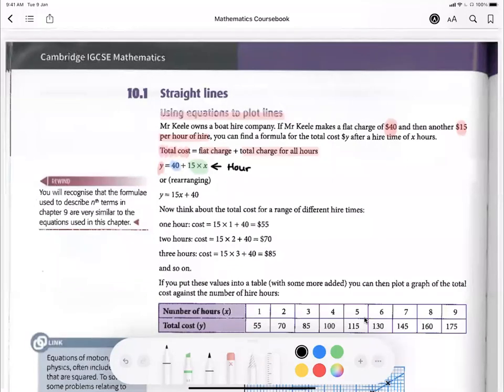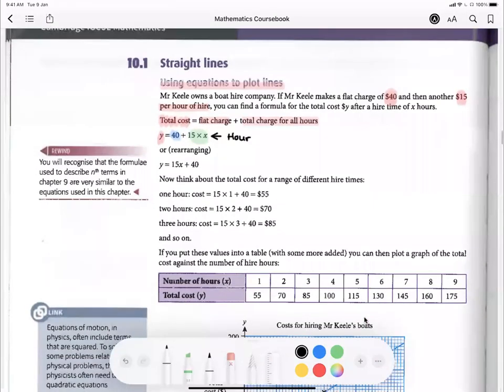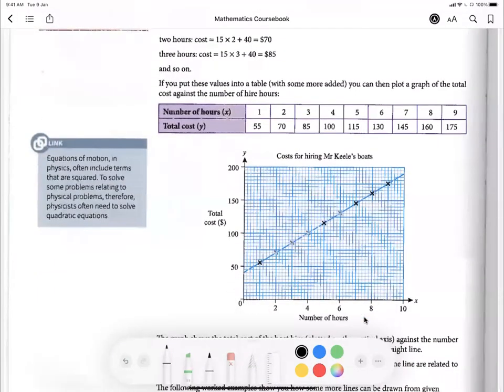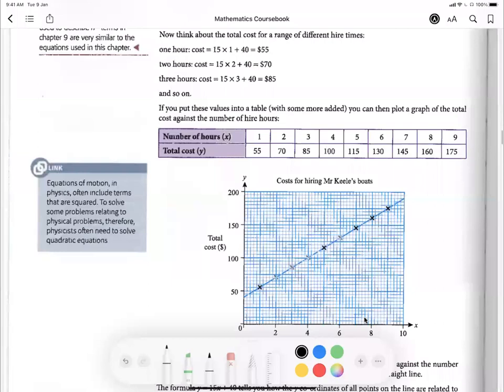So when we have a graph like this, we can immediately see any time, two hours, how much I'll earn, five hours, six hours, 10 hours, how much I'll earn, based on the straight line graph that's in broad.